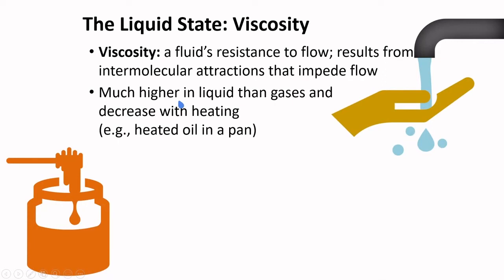Viscosity is much higher in liquid than gases and decrease with heating. You will notice this in heating oil in a pan. When you place your oil in a pan, the oil is viscous. But as you heat it up, the viscosity of the oil decreases.